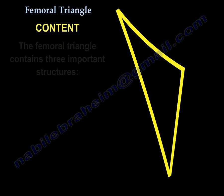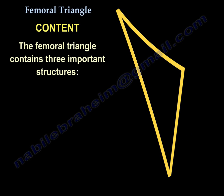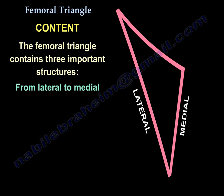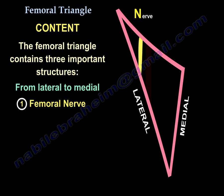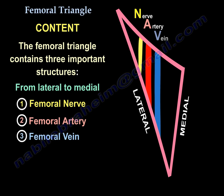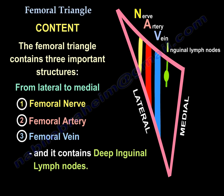The femoral triangle contains three important structures. Going from lateral to medial, these structures are the femoral nerve, the femoral artery, and the femoral vein. Additionally, it also contains the deep inguinal lymph nodes.